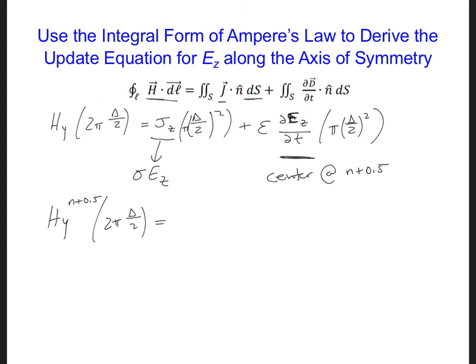So we're going to center this at n plus 0.5. So the HY component now is going to be at n plus 0.5, 2 pi delta over 2, and that is equal to sigma EZ n plus 0.5.